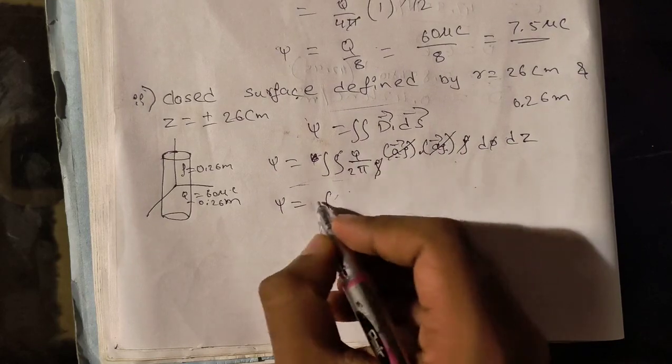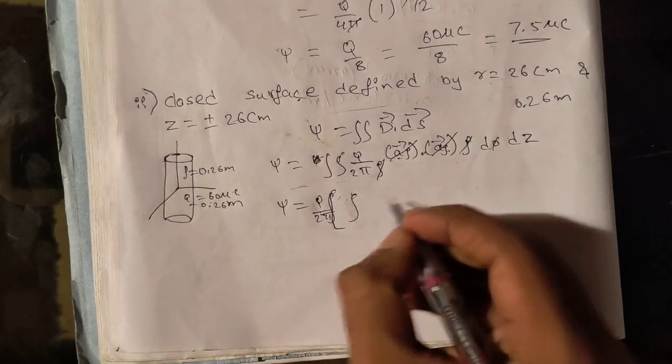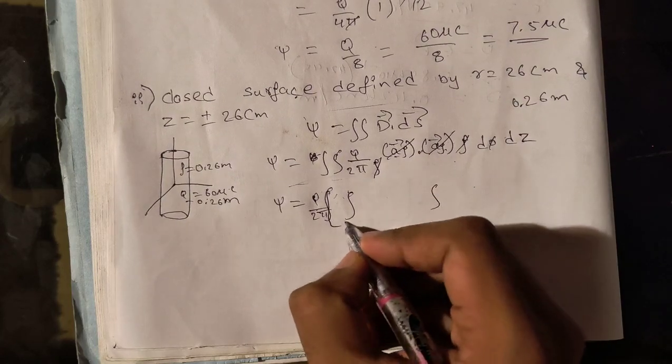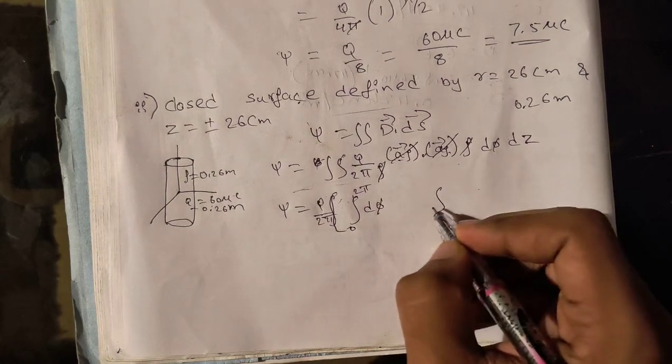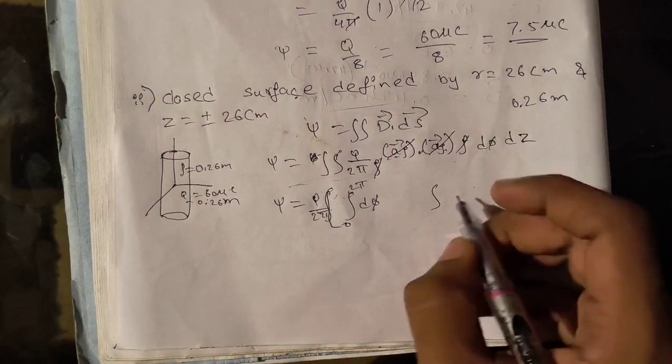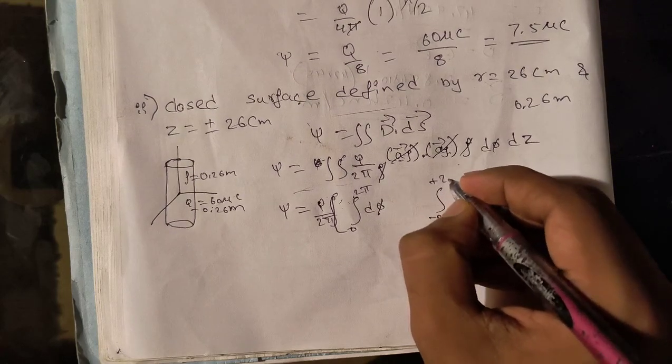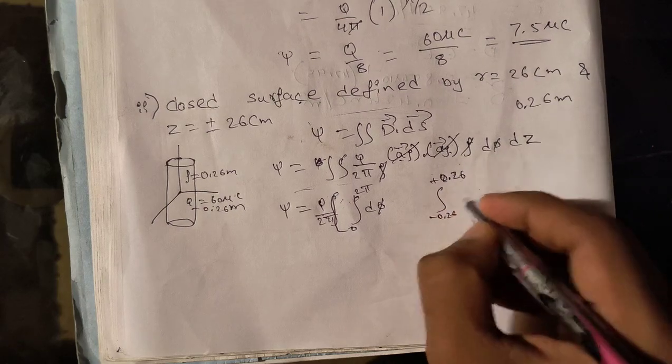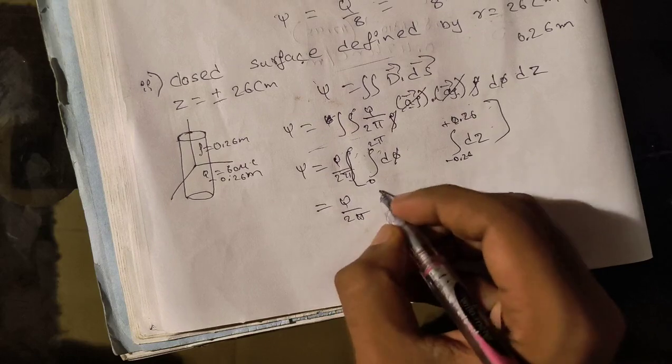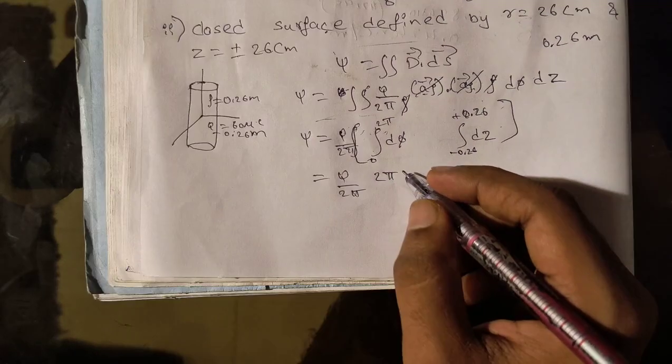This is for cylindrical coordinate system. For this, we should write ρ dφ dz. This is the formula from Gauss's law. Then we can substitute here. ρ and ρ get cancelled, and these two are the product of vectors, that is 1. Then Q by 2π is constant, take it outside.